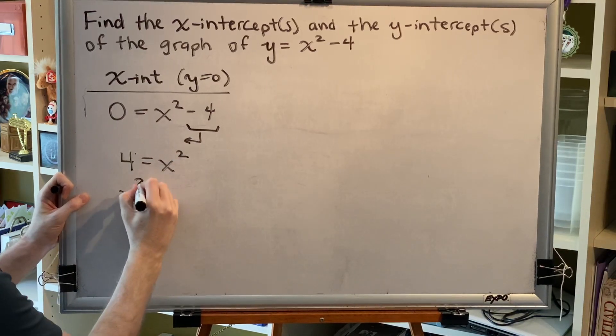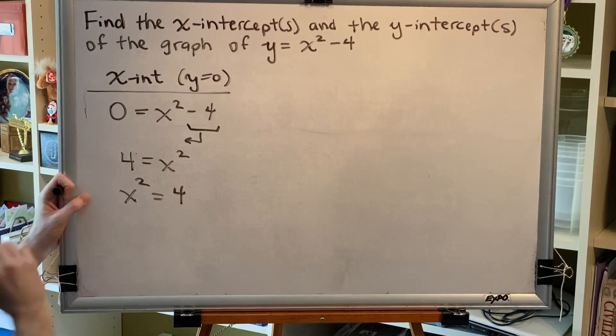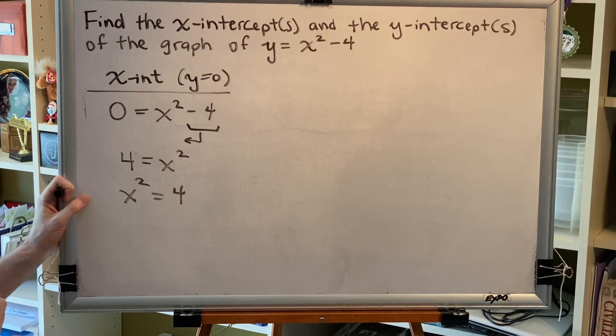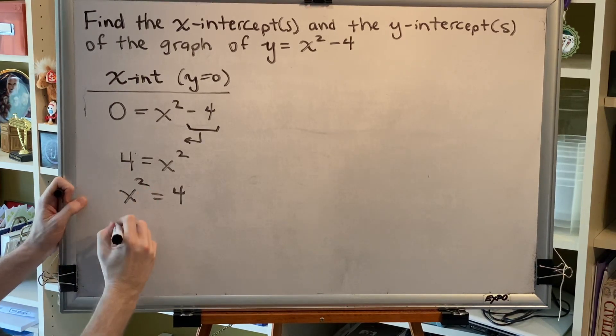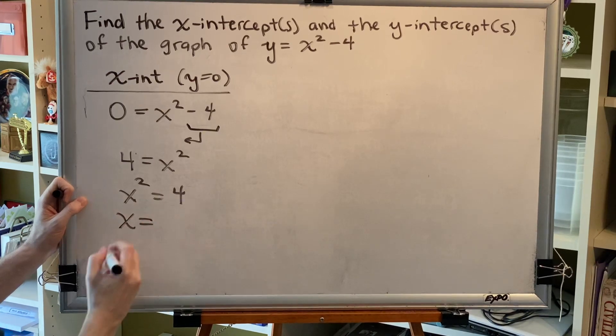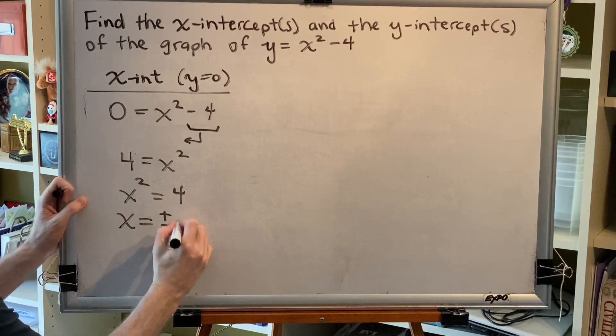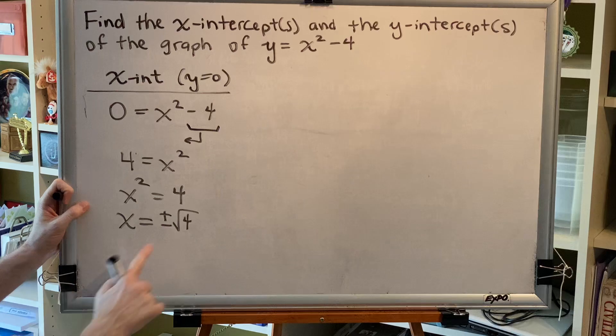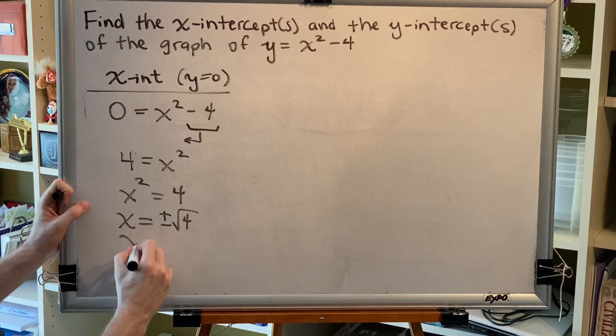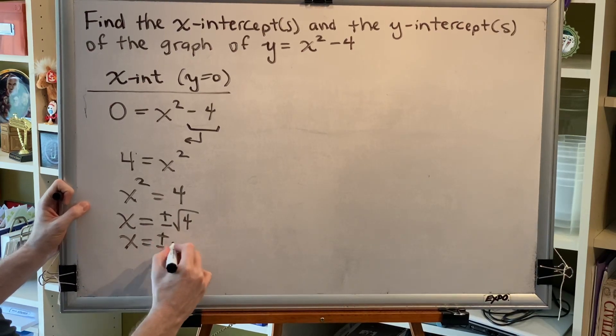I'm going to swap the two sides of my equation, and then I'm going to use the square root property from intermediate algebra, which says drop the square in any parentheses, and on the other side you put plus or minus square root. The principal square root of 4 is 2.